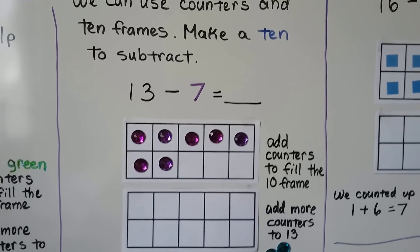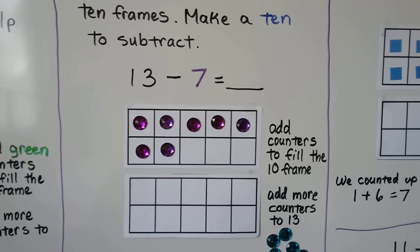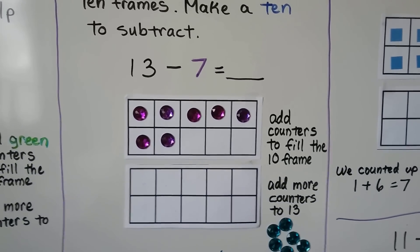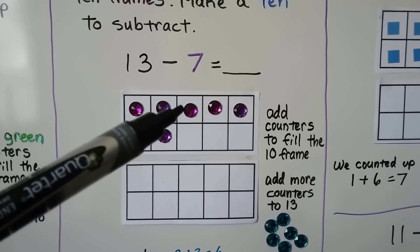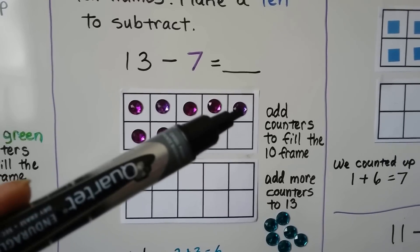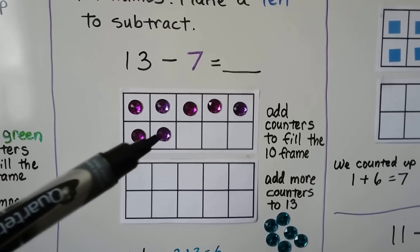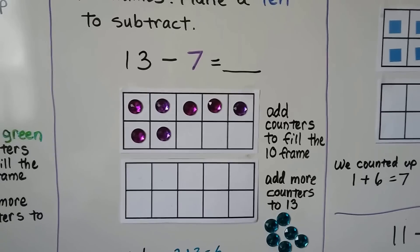13 minus seven. We have seven counters: one, two, three, four, five, six, seven.